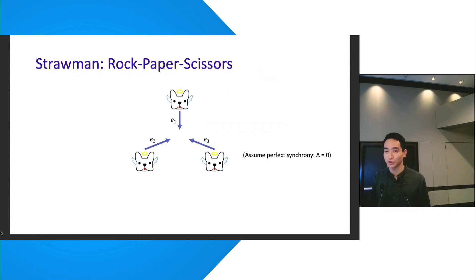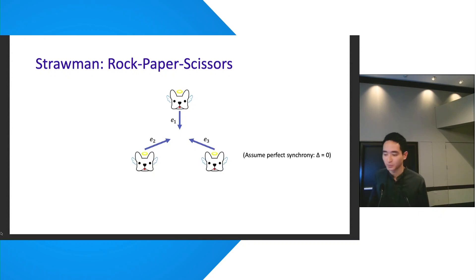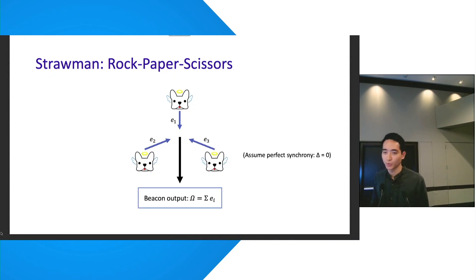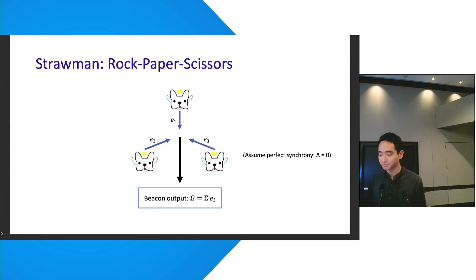To motivate construction of DRBs, we consider a strawman protocol as a warm-up, which we call rock-paper-scissors. We assume perfect synchrony — zero network latency — in which case we can require participants to contribute their entropy values all at the same time, at which point the beacon output could be computed as the summation of those entropy values.